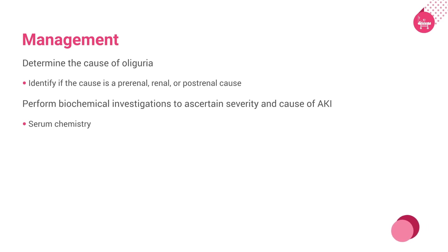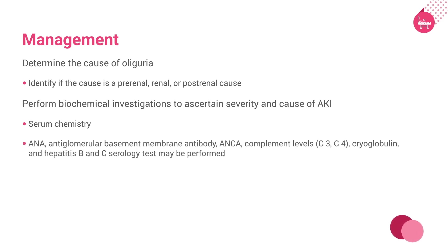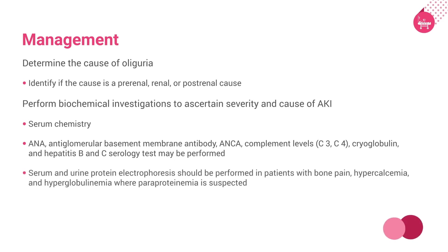Total protein, albumin, globulin, and unconjugated bilirubin to exclude hemolysis, and lactate dehydrogenase should be checked. Anti-nuclear factor (ANA), anti-glomerular basement membrane antibody, antineutrophil cytoplasmic antibodies (ANCA), complement levels C3 and C4, cryoglobulin, and hepatitis B and C serology tests can be performed. Serum and urine protein electrophoresis should be performed in patients with bone pain, hypercalcemia, and hyperglobulinemia where paraproteinemia is suspected.